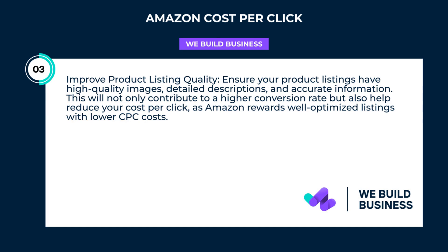Improve product listing quality. Ensure your product listings have high-quality images, detailed descriptions, and accurate information. This will not only contribute to a higher conversion rate but also help reduce your cost per click, as Amazon rewards well-optimized listings with lower CPC costs.